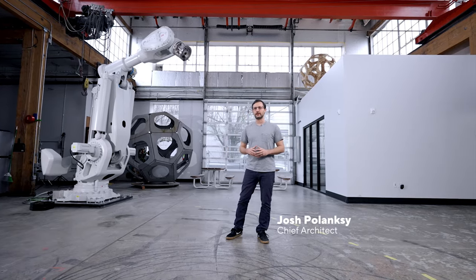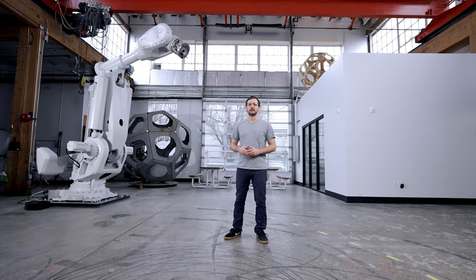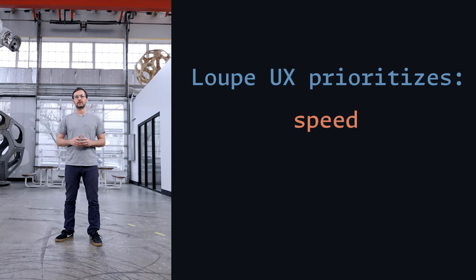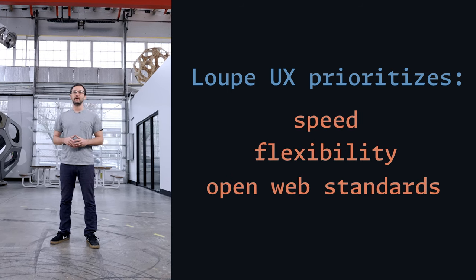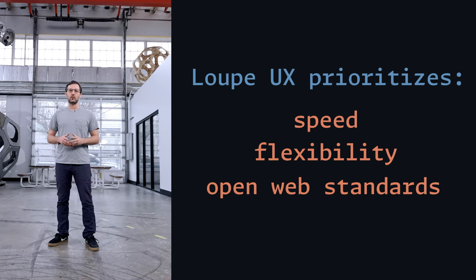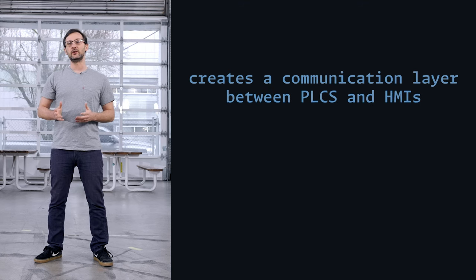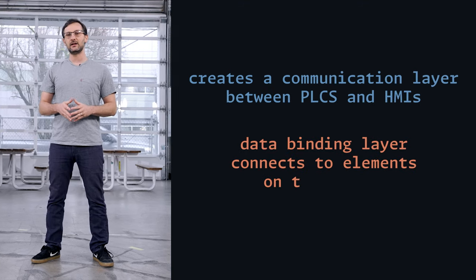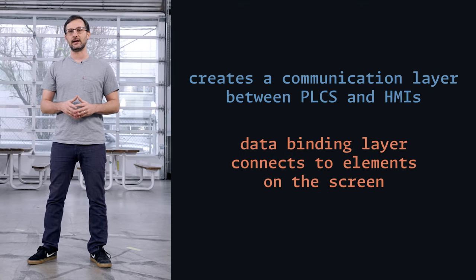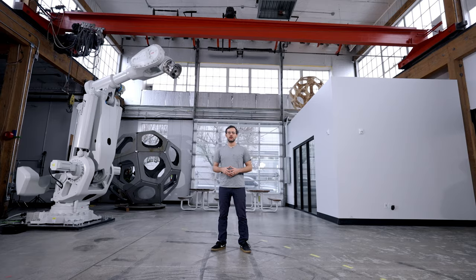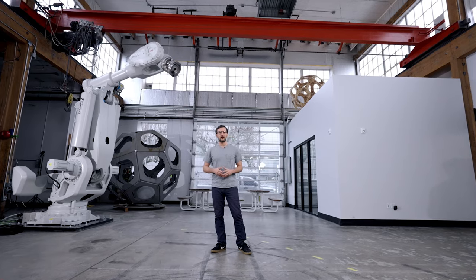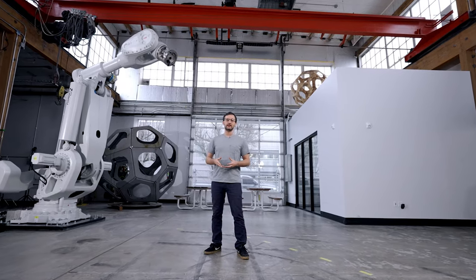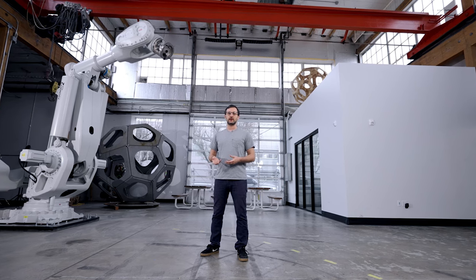So what makes Loop UX work well in the industrial space? When we first built Loop UX, we prioritized speed, flexibility, and building on top of open web standards. We created a communication layer between PLCs and HMIs, and a data binding layer to connect that data to elements on the screen. With data binding, a developer can connect a PLC to everything from a simple button to complex 3D models.